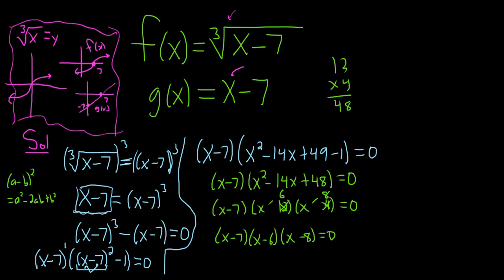Sometimes your first attempt isn't the best one. I tried 12 and 4 and realized you can't add them to get negative 14. But 6 times 8 is 48 and they add to negative 14. So we have three possible intersection points: x equals 6, 7, and 8.